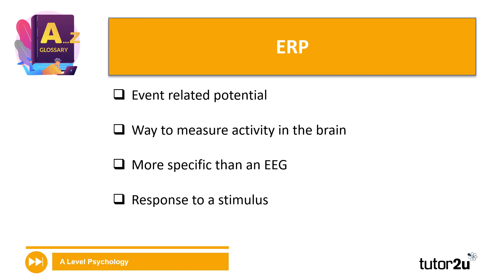Let's start with ERPs. ERP stands for event related potential and, very similar to EEGs, it's a way to measure the activity in the brain. One thing it is better at than an EEG is that it provides more specific information about the brain, whereas EEGs were much more general. The other difference is that an ERP is in response to a stimulus. The individual will still have their brain waves recorded, wearing electrodes, with activity outputted onto a graph, but the participant is given a stimulus and we measure the response to that stimulus rather than just a general response.